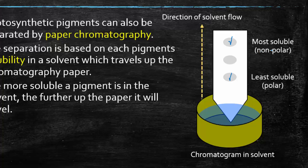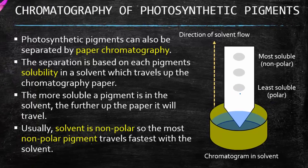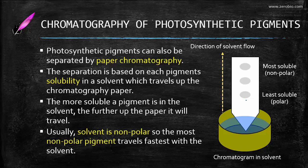The most soluble pigment is the nonpolar one — assuming the solvent we're using is nonpolar. Because of the principle that like dissolves like, nonpolar substances will travel the farthest with a nonpolar solvent. Think of it like they enjoy each other's company or they're attracted to each other. The nonpolar substance will travel the farthest with the nonpolar solvent, and the least soluble substance will be the polar one — it doesn't react well with the solvent, so it leaves the solvent faster. Usually the solvent is nonpolar, so the nonpolar pigment will travel the fastest and hence the furthest.